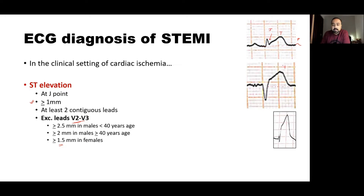Looking at ECG examples: you can identify the T wave, P wave, and TP segment. The point where the QRS complex ends is the J point. You can see significant ST elevation above the baseline. In the next example, where the baseline is not linear, we can roughly consider the PR segment as the baseline. The J point is identified and there are massive ST elevations — this is a tombstoning pattern of ST elevation, examples of STEMI.